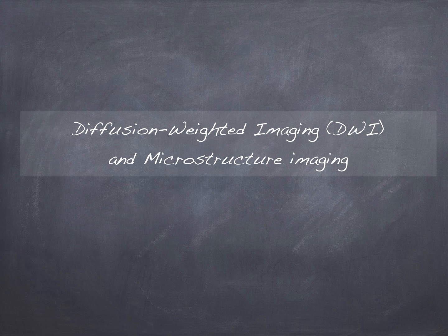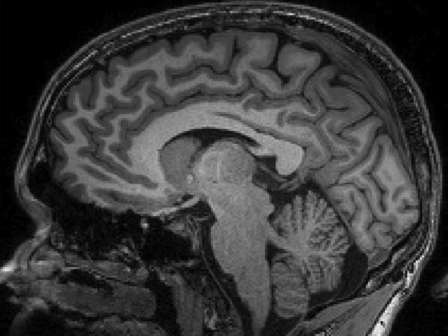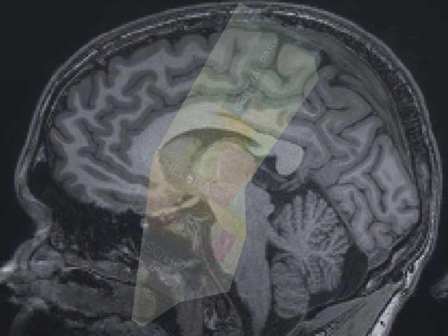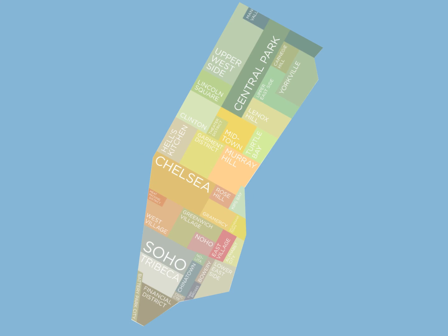Today I would like to talk about diffusion-weighted imaging and microstructure imaging. The reason why we are interested in microstructure imaging is that most modalities we use to scan the brain are scalar. There are MRI and CT scans and they give us information about the structures of the brain. I like to think of those as being the maps of the neighborhood in a city.